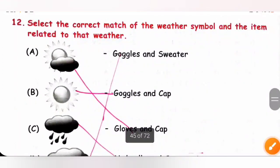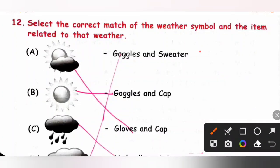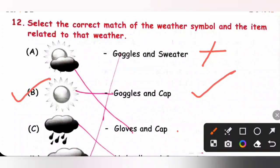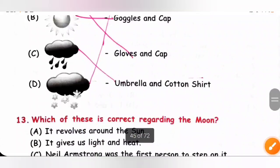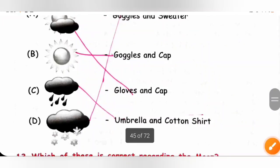Question 12: Select the correct match of the weather symbol and the item related to that weather. Option A — sunny and cloudy with goggles and sweater: we don't wear sweaters on sunny days. Option B — sunny with goggles and cap: we use goggles to protect our eyes and a cap against extreme heat — yes. Options C and D are incorrect. So option B is the correct answer.